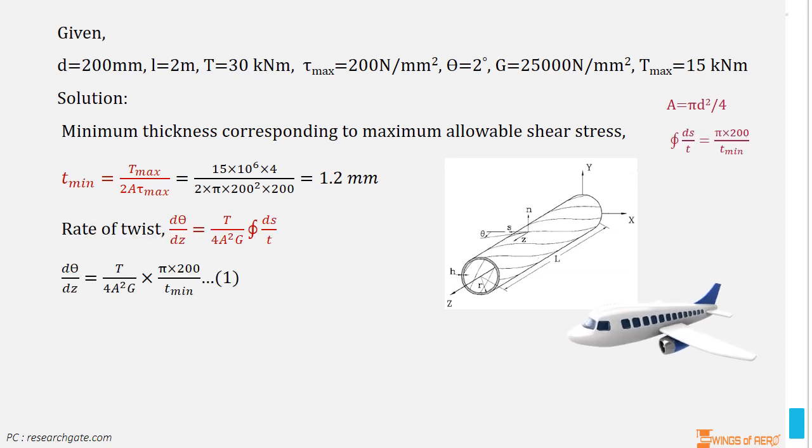If the shear modulus is constant around the section, then the rate of twist in a shear loaded thin wall closed section beam is given by dθ/dz is equal to T divided by 4 into A² into G, contour integral of ds divided by T. In which, contour integral of ds divided by T is equal to πd divided by T_min.